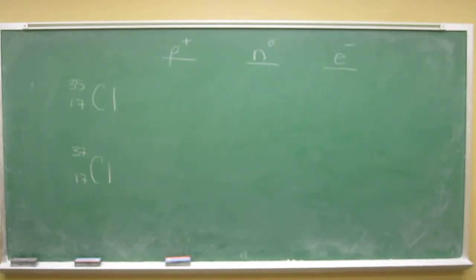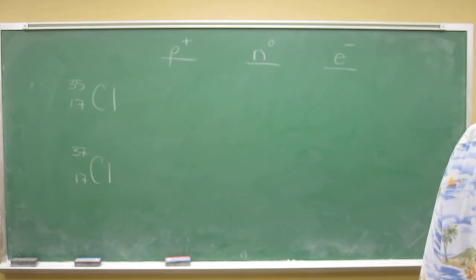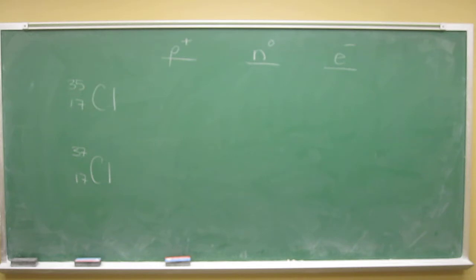Okay, let's start the day off with some isotope questions. The first one: the atomic symbol for two isotopes of chlorine are shown below. Calculate the number of protons, neutrons, and electrons for each.